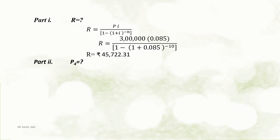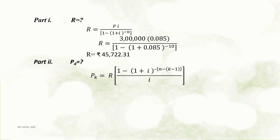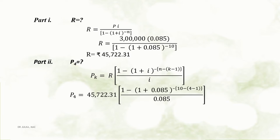Part 2: Here we want to calculate principal outstanding in the beginning of the 4th year. The principal outstanding in the beginning of the kth period equals R multiplied by [1 minus (1 plus i) raised to the power minus (n minus k minus 1)], the whole divided by i. Putting R = 45,722.31, i = 0.085, n = 10, and k = 4, after calculation we get the principal outstanding in the beginning of 4th year as Rs 2,34,030.27.